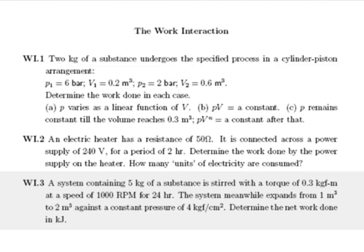A very careful reading is in order. We have a system containing 5 kg of a substance — no mention of anything else about the system, so all we know is the mass is 5 kg. It is stirred with a torque of some value at a speed of 1000 rpm for 24 hours. So we have the value of the torque, the speed, and the time over which stirring takes place. The system meanwhile expands.